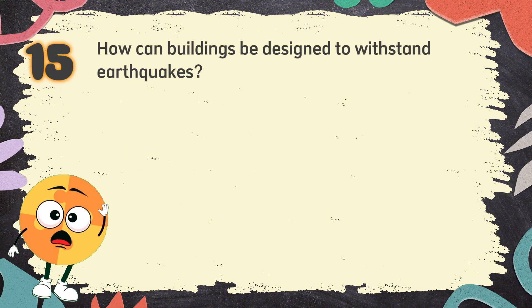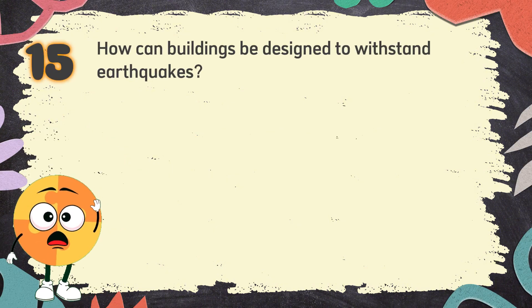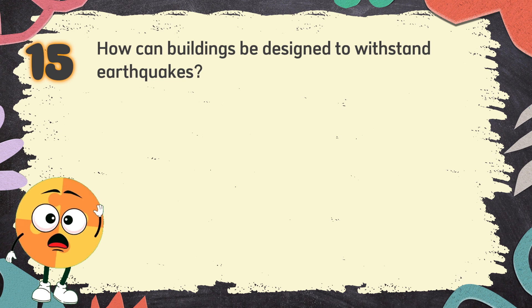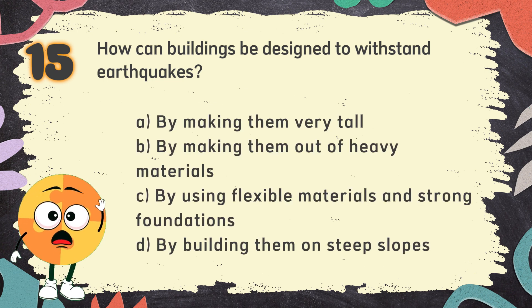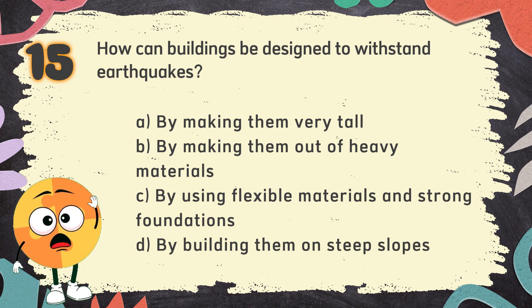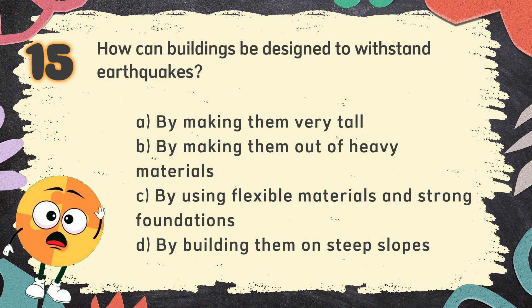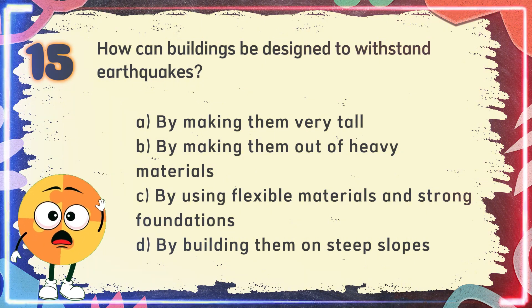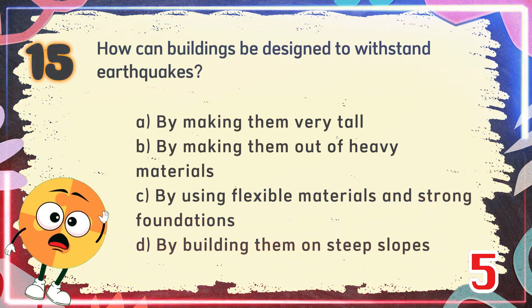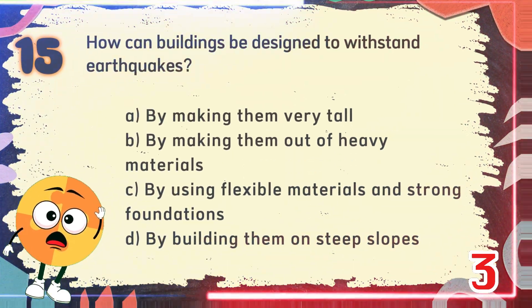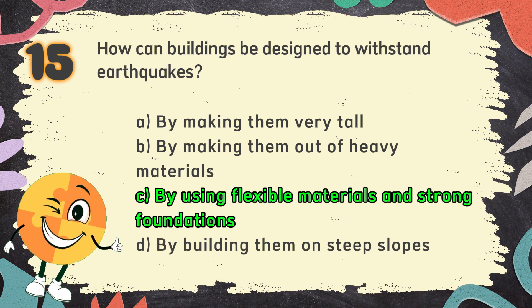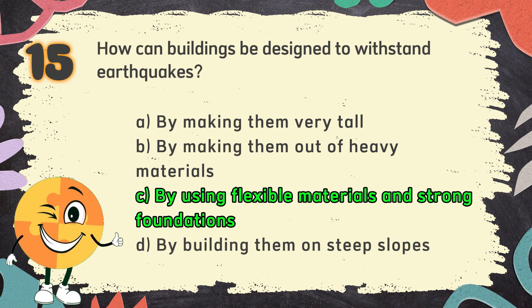Number 15. How can buildings be designed to withstand earthquakes? The choices are: A. By making them very tall, B. By making them out of heavy materials, C. By using flexible materials and strong foundations, D. By building them on steep slopes. The correct answer is C. By using flexible materials and strong foundations.